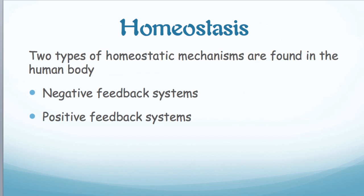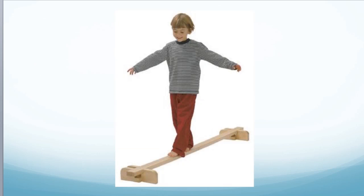There are two different kinds of homeostatic mechanisms found in the human body: negative feedback systems and positive feedback systems. We'll be talking about these feedback systems in Homeostasis Systems Part Two — check back and watch that one. Thank you.